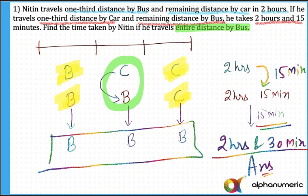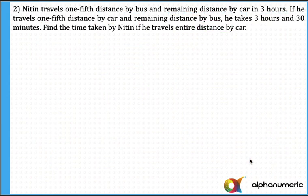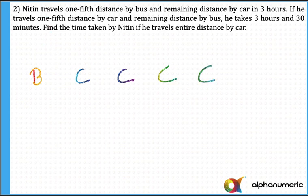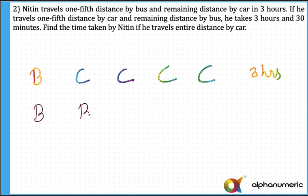Whenever there is a question based on interchanging of distance, or even interchanging of time, we can use this concept. Let's take one more example. Nitin traveled one-fifth of the distance by bus and the remaining distance — that is four-fifths — by car. So the first part by bus and the remaining four parts by car, and the total time taken is three hours. If he travels one-fifth by car and four-fifths by bus, then four parts by bus and the last part by car, and he takes three hours and thirty minutes.